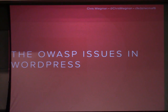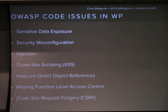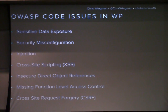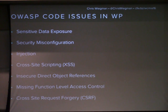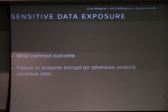The OWASP project has a number of vulnerabilities in the 2013 list that specifically target WordPress. We're going to talk about sensitive data exposure, security misconfiguration, injection, cross-site scripting, insecure direct object references, missing function level access control, and CSRF — cross-site request forgeries. Most of these are very developer-centric, but you don't have to be a developer to create or take advantage of a vulnerability created by somebody else.